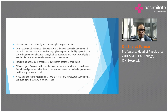Signs pointing to bacterial pneumonia include fever with rigors, high-grade temperature, and toxic appearance. Myalgia and headache are more common in mycoplasma pneumonia. Pleuritic pain is seldom encountered except in bacterial pneumonia. Clinical signs of consolidation are variable and unreliable in childhood pneumonia, but tend to be best developed in bacterial pneumonia, particularly staphylococcal pneumonia.